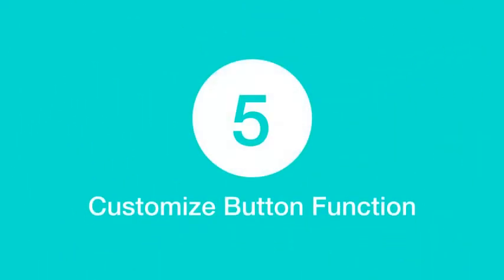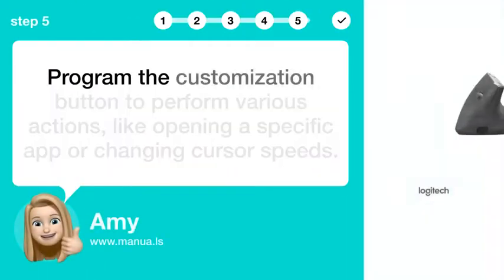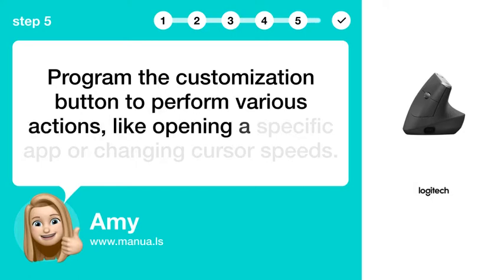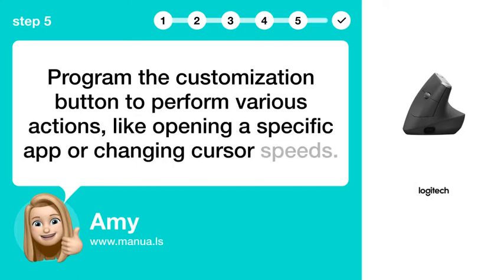Step 5: Customize button function. Program the customization button to perform various actions, like opening a specific app or changing cursor speeds.